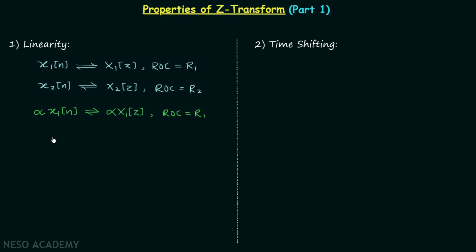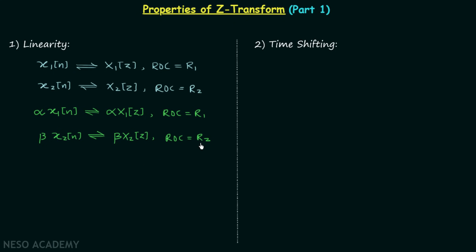Following the same process, we will scale signal x2[n] by beta. We will have a new Z-transform equal to beta·X2(z), and the region of convergence will remain the same, equal to R2.